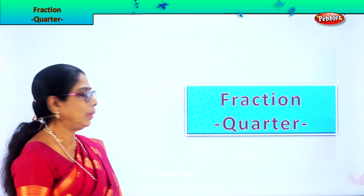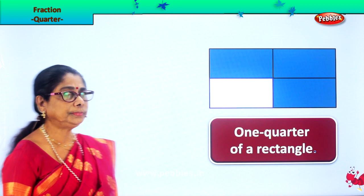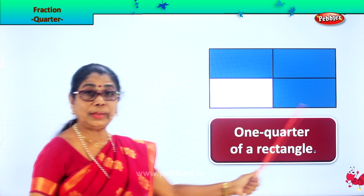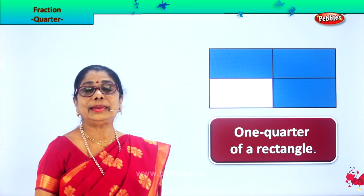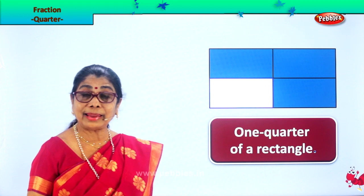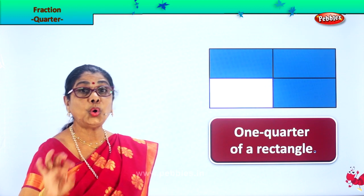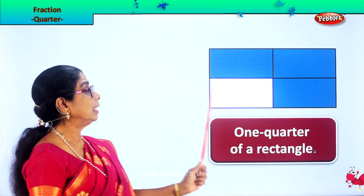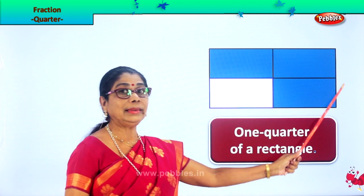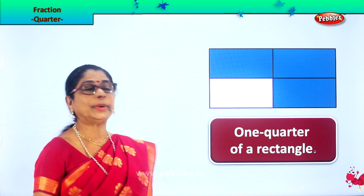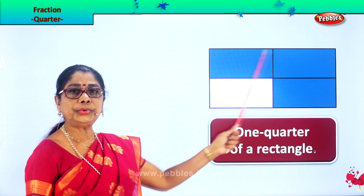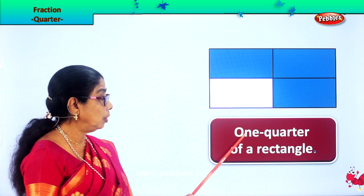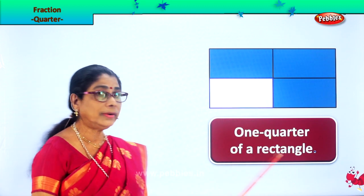Look, here we are. In the first picture, we have a rectangle. What shape is this? A rectangle. Now we divide the rectangle into four equal parts. We draw a line and we get two halves. Again, we draw another line and we get four parts: one, two, three, four. This is called one quarter of a rectangle.